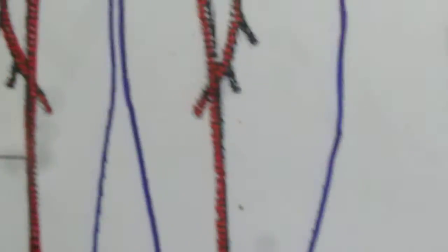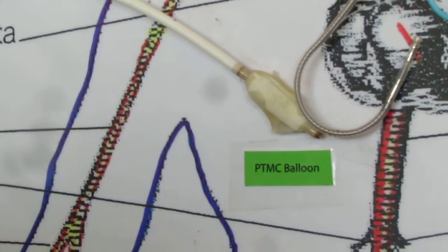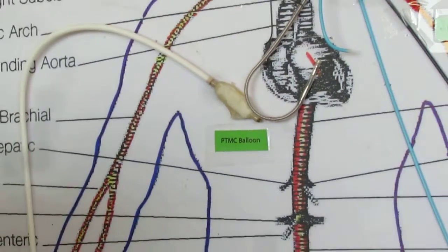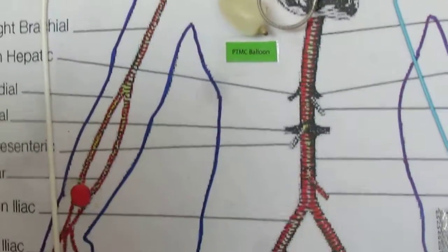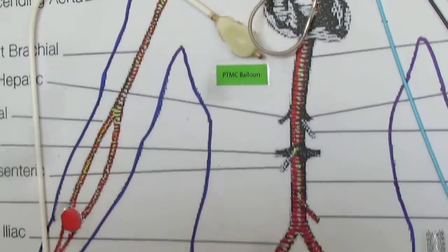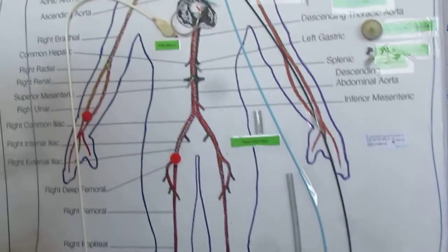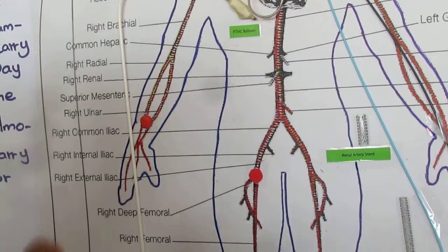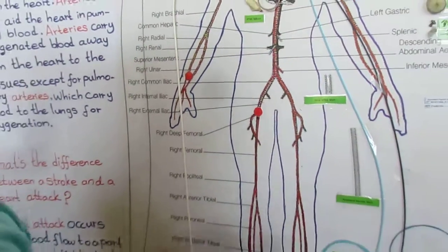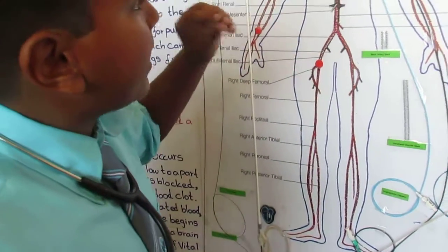And this is the PTMC valve — the Percutaneous Transvenous Mitral Commissurotomy valve. The PTMC valve is used in the aortic valve when calcium deposits build up in the aortic valve. We send it in and burst it like this in the aortic valve to make calcium flow out. Then they send a stent inside with the tissue of the aortic valve through our heart, and pump it with the PTMC valve again so it expands like the aortic valve.